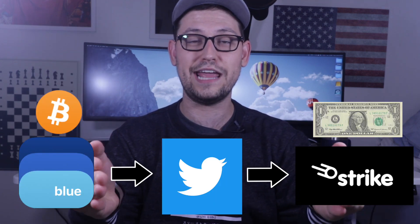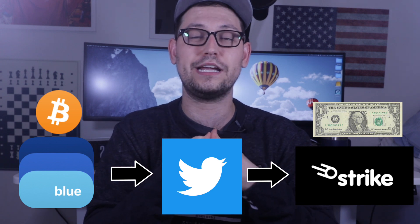Basically, anyone in the world with a Bitcoin Lightning wallet — which are 100% free to download and can run on pretty much any device: desktop, iPhone, Android, or a Raspberry Pi — anyone with a Lightning wallet and some Bitcoin in it, no matter where they are in the world, can tip people over Twitter. The people receiving the tip get it in their Strike account as US dollars.